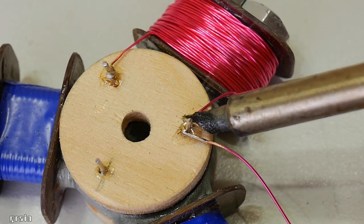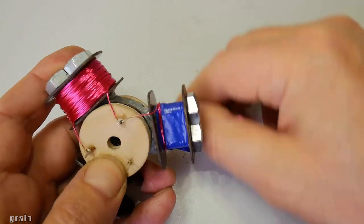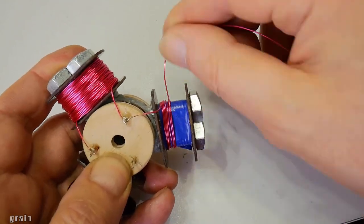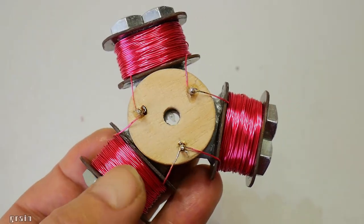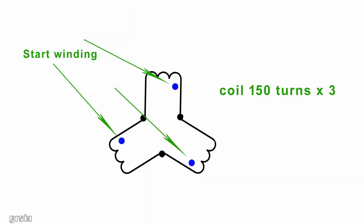The end of the first coil is connected to the beginning of the second coil. Then the end of the second coil is connected to the beginning of the third coil. And the end of the third is connected to the beginning of the first. This is a standard delta connection. All coils are wound in one direction.